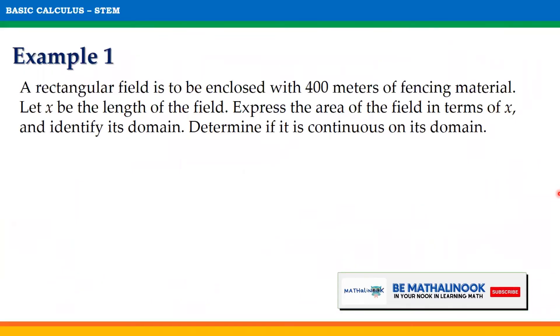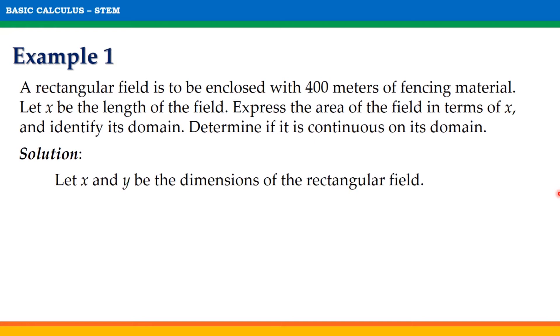For example, number one, a rectangular field is to be enclosed with 400 meters of fencing material. Let x be the length of the field. Express the area of the field in terms of x and identify its domain. Determine if it is continuous on its domain. Let x and y be the dimensions of the rectangular field.